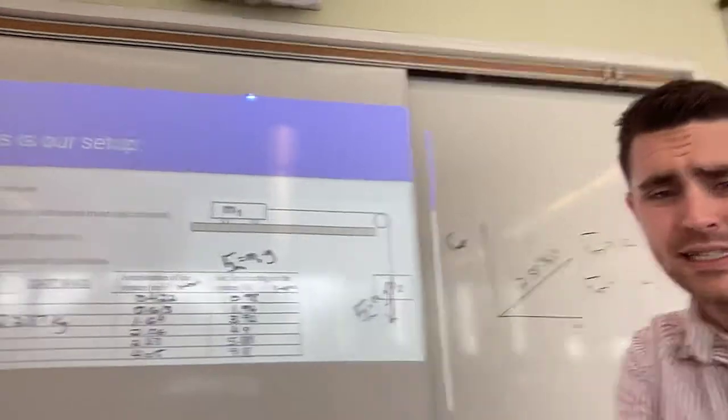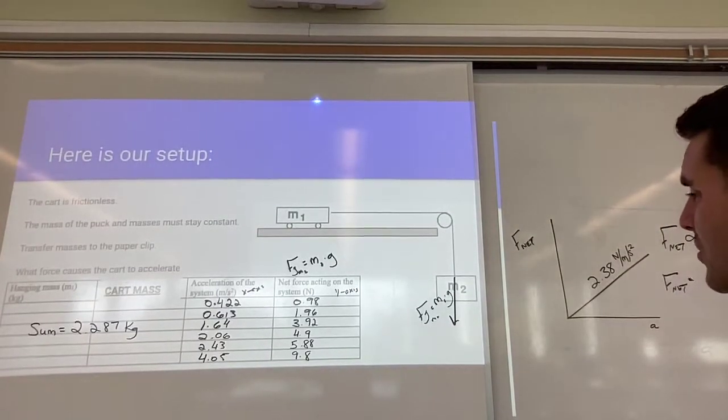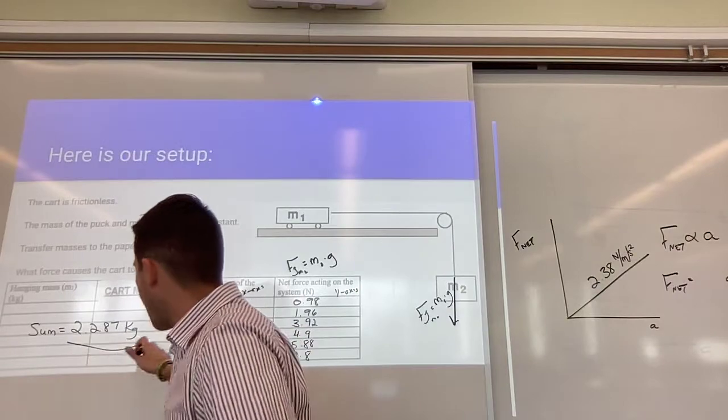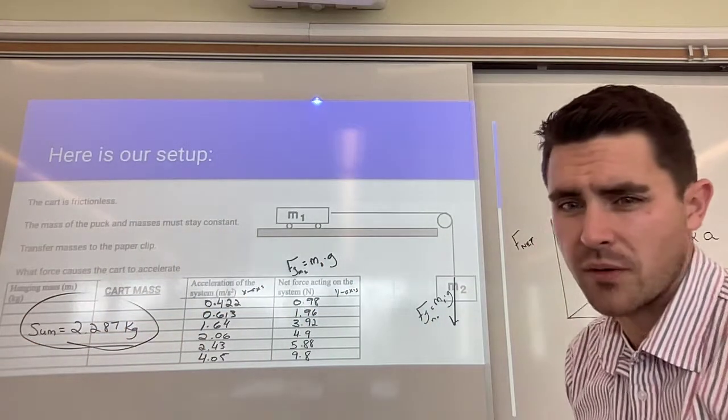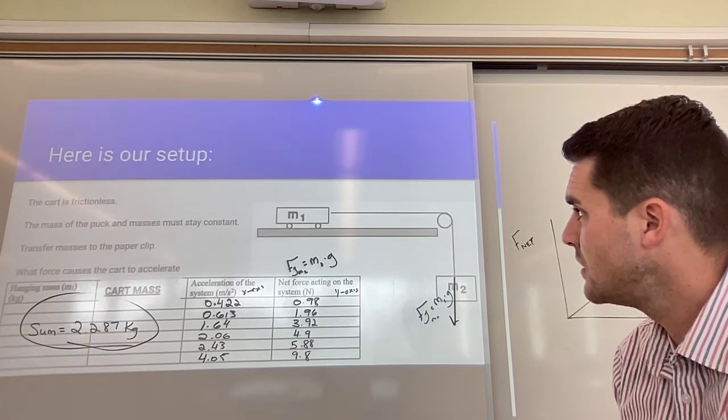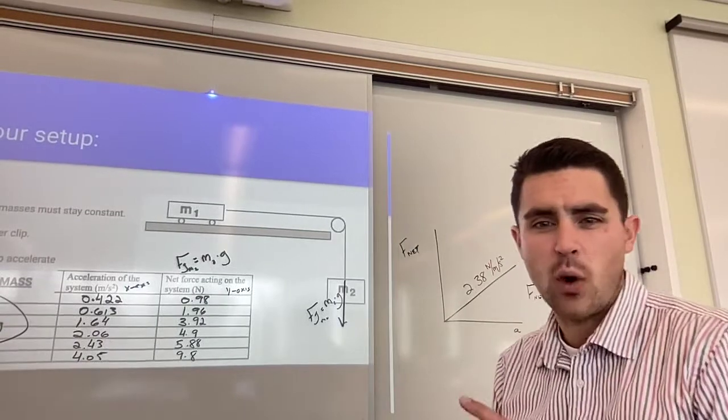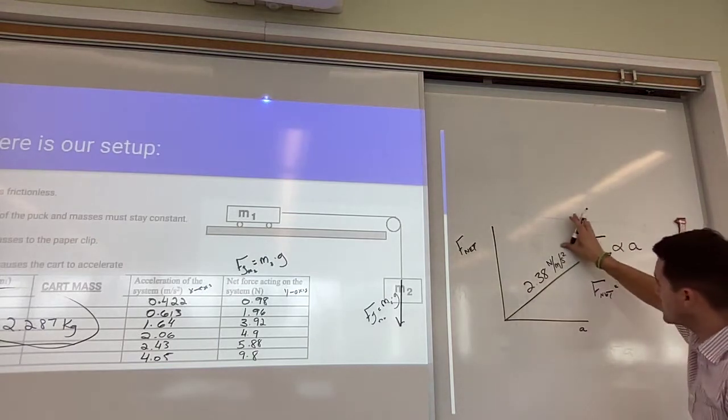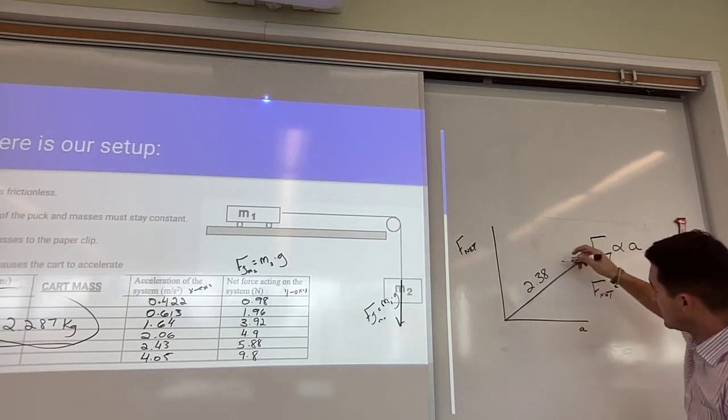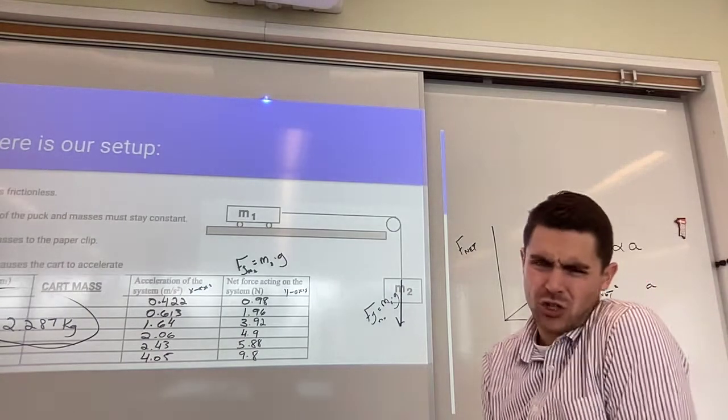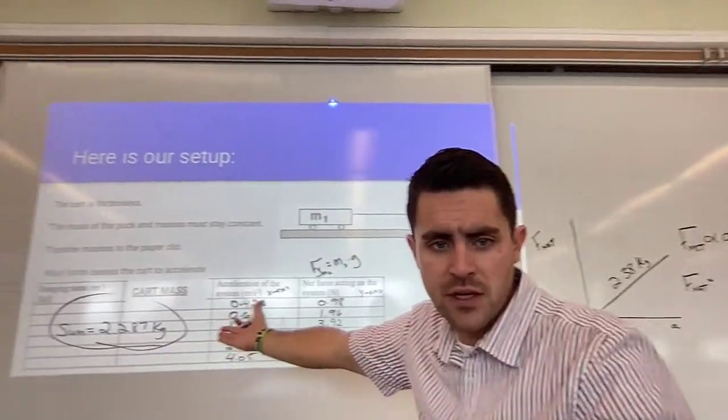So because I don't know what that slope is, like those units don't make sense to me, I look back at my lab, and I say, is 2.38 similar to any other number I see over here? 2.38. Oh, wait. I mean, it's not spot on, but it's really close to this number. Interesting. What I find out, if I actually go ahead and start messing around with these units, is that this slope is not just newtons per meters per second squared. This slope actually is kilograms, which matches, or is pretty darn close, to the sum of the mass in my system.